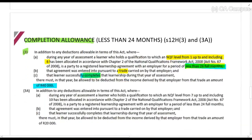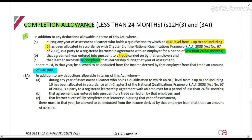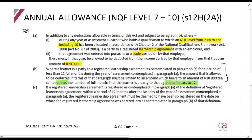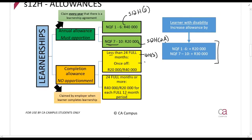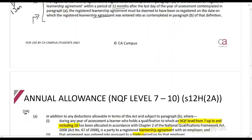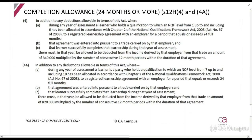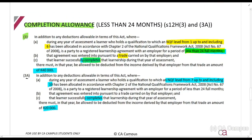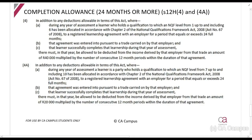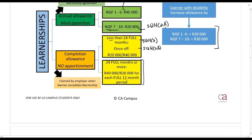Section 12H(3A) is the same rule but for NQF level 7 to 10 completed in less than 24 full months — the amount is R20,000. Then section 12H(4): if the learnership period equals or exceeds 24 full months, NQF level 1 to 6, and it has been completed, you get R40,000 multiplied by the number of consecutive 12-month periods. That is section 12H(4).